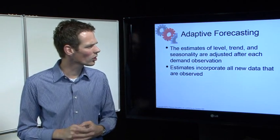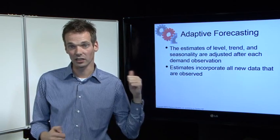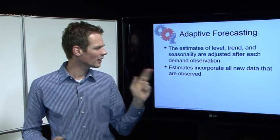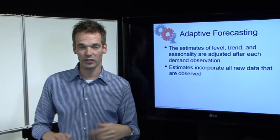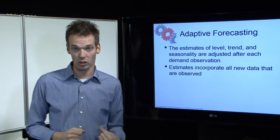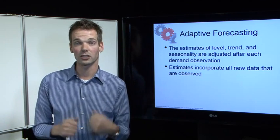Adaptive forecasting estimates again the level, the trend, and the seasonality, and they are adjusted after each and every observation. What you saw in the second video, in the static method...